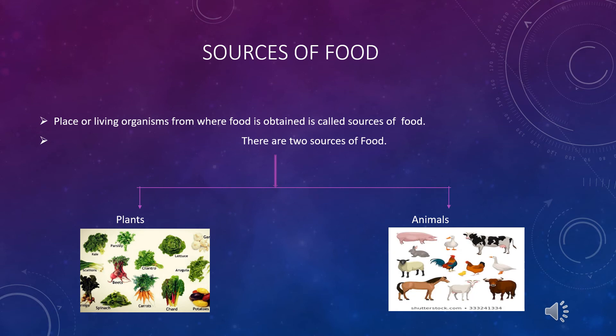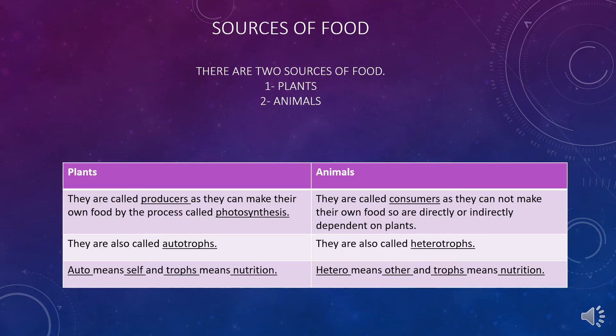Now let's look at sources of food. The place or living organisms from where food is obtained are called sources of food. There are primarily two sources: plants and animals. Everything we eat from morning to night is obtained from these two sources. For example, if I consume green vegetables, the source is plants; and if I have chicken for lunch, the source is animals. Let's understand the difference between these two sources.